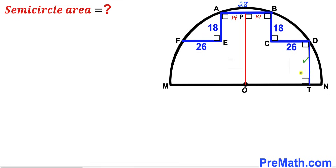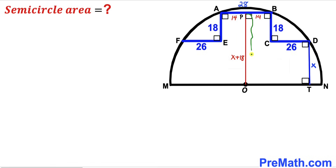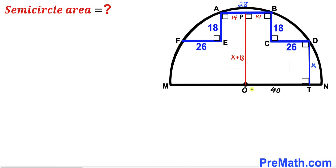In the next step, I have dropped this perpendicular DT on diameter MN, and I'm going to label this DT length as x. We can see that OP length is going to be the sum of segments x and 18, so OP equals x plus 18. Likewise, segment OT is the sum of BP and CD: 14 plus 26, so OT equals 40.